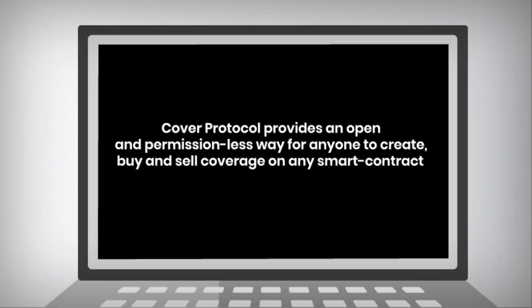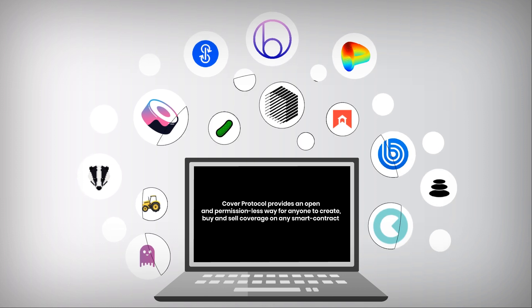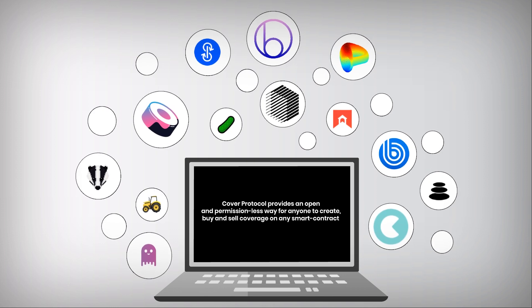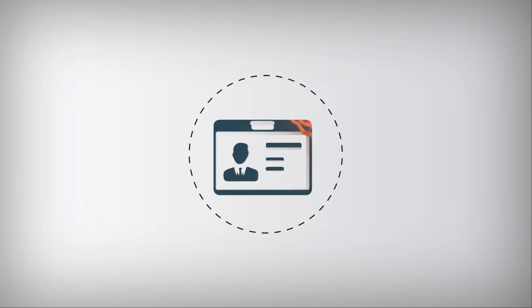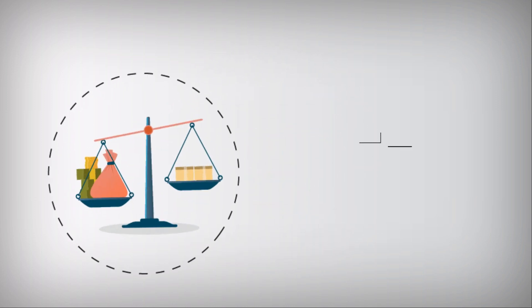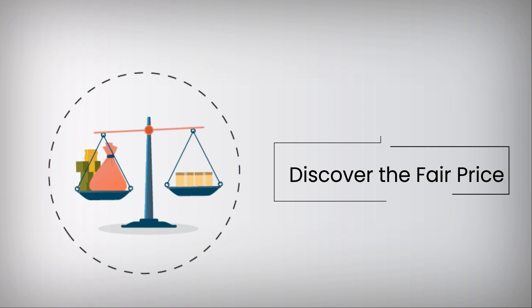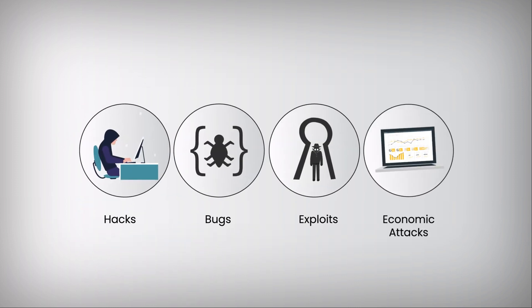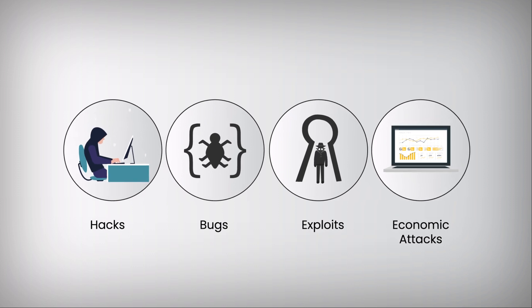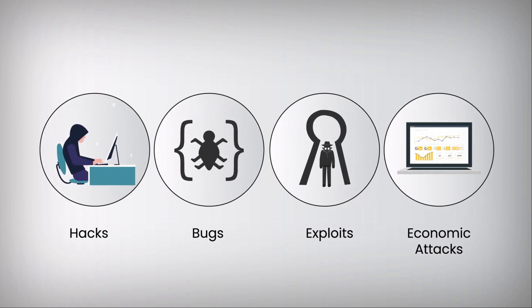Cover Protocol provides an open and permissionless way for anyone to create, buy and sell coverage on any smart contract without having to give away their identity. This enables markets to discover the fair price for coverage. Coverage is for anyone trying to protect their investments from unexpected hacks, bugs, exploits and economic manipulation attacks.